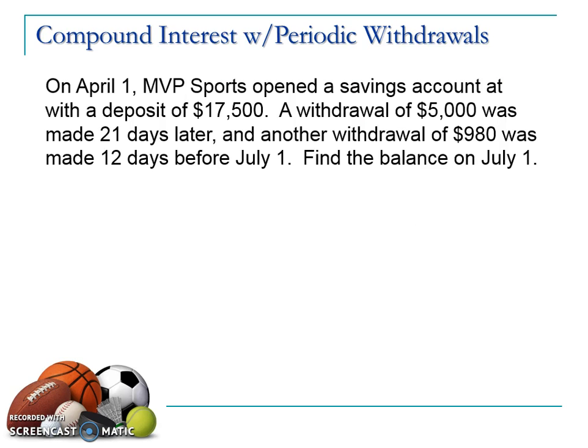Here we have a second example. On April 1st, MVP Sports opened a savings account with a deposit of $17,500. A withdrawal of $5,000 was made 21 days later, and another withdrawal of $980 was made 12 days before July 1. Find the balance on July 1. To look at this problem, we turn the tables around slightly — instead of starting with the initial deposit and subtracting withdrawals, we look at how long the money is in the account before it is withdrawn.